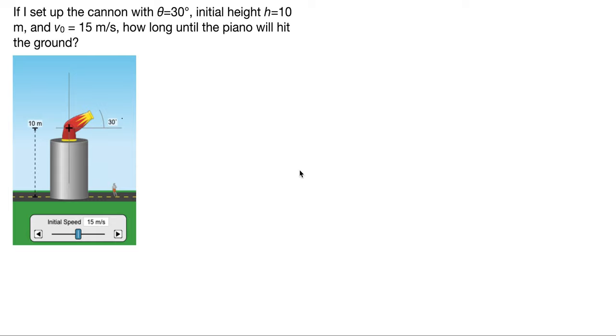This is another example from projectile motion, and it shows what happens if we consider a cannon set up with an angle of 30 degrees, initial height of 10 meters, and v-naught of 15 meters per second.